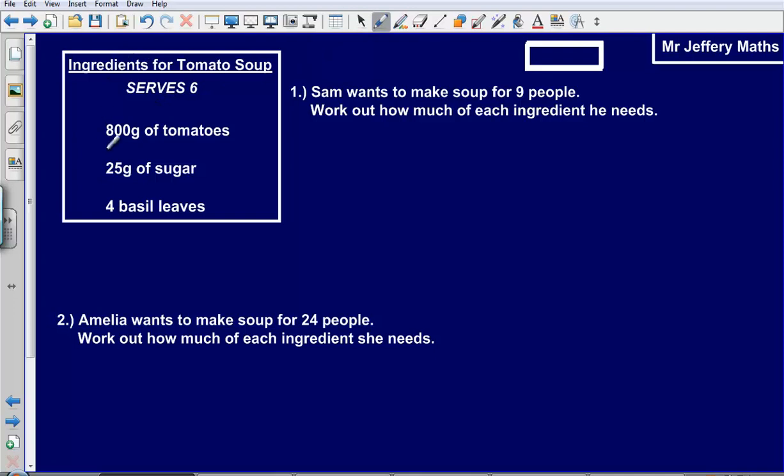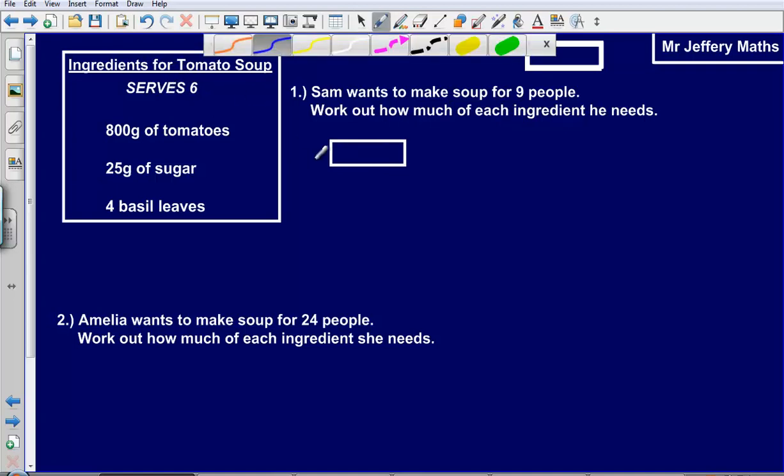So here, we're told a similar type of question, ingredients for tomato soup. Sam wants to make soup for 9 people, work out how much of each ingredient he needs. So again, same idea as before, we're going to take a look at what we need to begin with. So for tomatoes, we're told to make soup for 6 people, that is 800 grams of tomatoes.